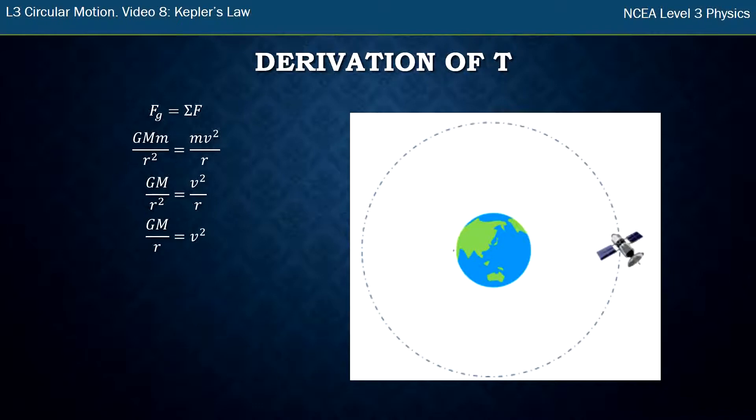The other derivation we can do is look at the time it takes the satellite to go around this orbit. Starting from v squared, I'm going to say that an object undergoing circular motion has velocity 2πr over T, which is distance over time, because the distance around a circle is 2πr and the time is the time period capital T.